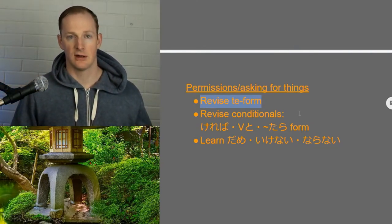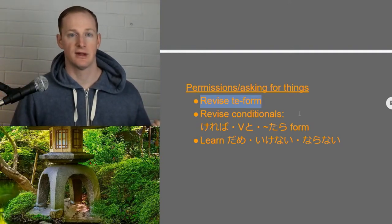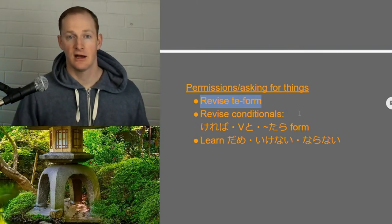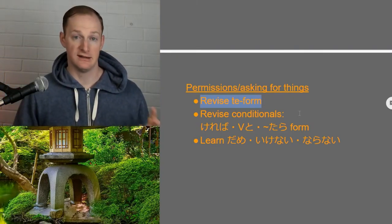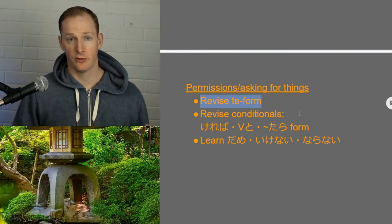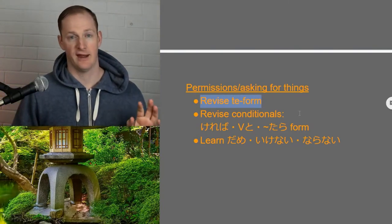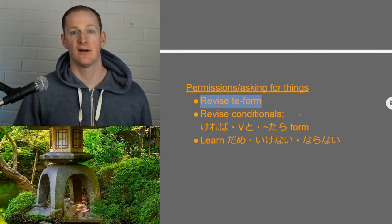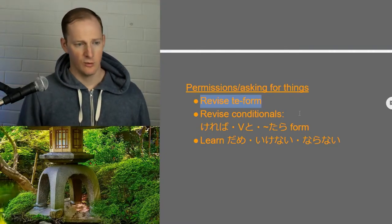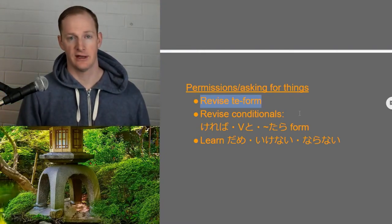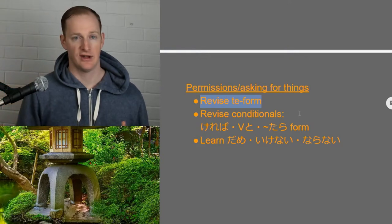For the i-adjectives, we're just replacing the I with kute. For the na-adjectives and nouns, we're just putting DE on the end. And then for verbs — for ru-verbs, we're just replacing the RU with TE. And for u-verbs we've got that table. SURU, KURU, and IKU are three exceptions, which become SHITE, KITE, and ITTE.